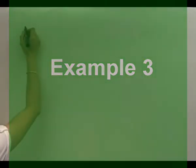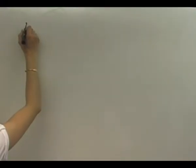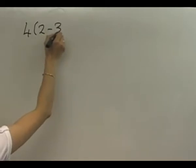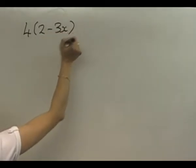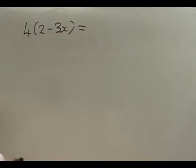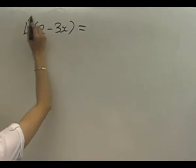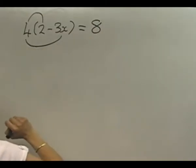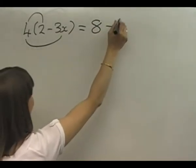The third example: 4 open bracket 2 take away 3x close bracket. Here's an example with a negative in the middle, just to make sure you know what to do. There's 4 lots of everything inside the brackets. 4 lots of 2 is 8, and 4 lots of negative 3x is negative 12x.